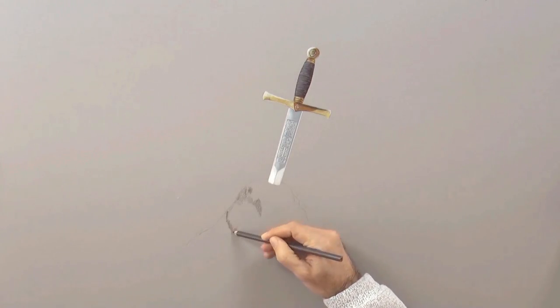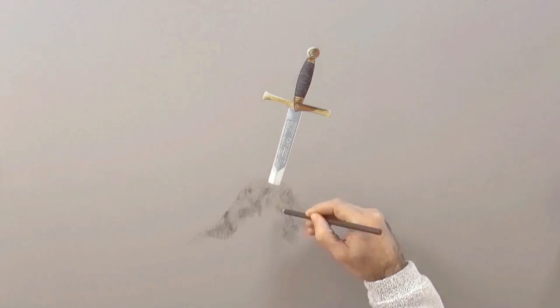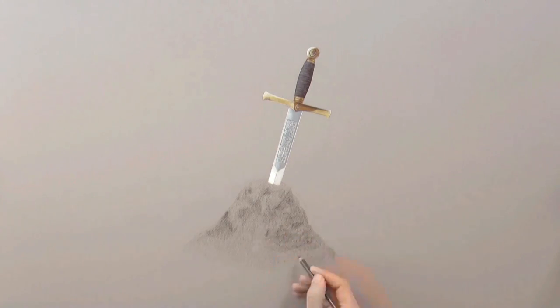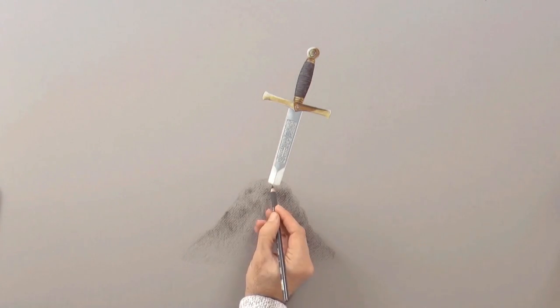We can do the stone with a couple of tones of gray. And here we should do the shadow of the sword, so it looks more realistic.